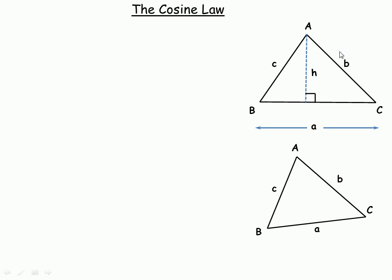If you take a look at the triangle in the top right hand corner, I have the angles labeled A, B, and C, and the sides opposite are the lowercase counterparts to those capital letters. We normally use a capital letter for angles and a lowercase letter for the side opposite. So for example, this is angle B, so across here is side b. This is angle C, so that's side c. Angle A is at the top, so the one across the bottom is called side a, lowercase a.